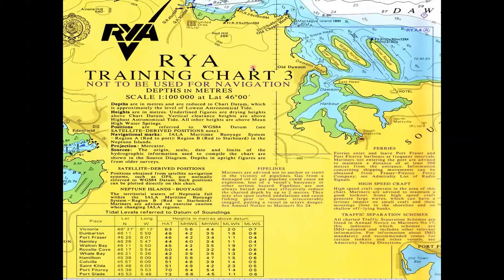This area of the chart where the writing is is called the legend, and the Admiralty always put the legend on the land so as not to obstruct the sea, which is where you're going to do your navigation. The legend could be anywhere on your chart where there's a bit of land. The colours chosen are chosen for a particular purpose — they can be seen under a red light. At night when you're navigating you would have a red light on your chart table because red doesn't destroy your night vision; white does. You can see these colours under a red light, so you're able to navigate.